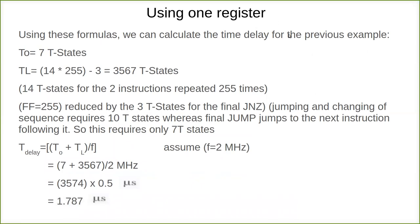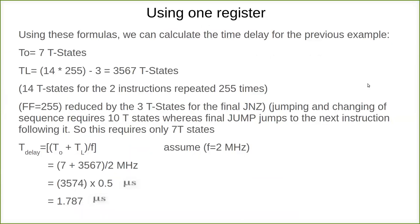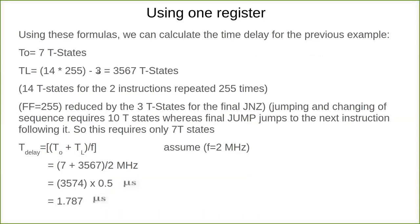Using these formulas, we calculate the time delay for the previous example. T0, time delay outside, is 7 T-states for MVI. Then TL, within the loop, is 14 times 255. Why 255? Because the equivalent of FFH is 255, from 0 to 255. Minus 3 because when it becomes zero, it comes out.